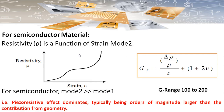For semiconductor materials, Mode 2 dominates — that is, the resistance change due to change in resistivity dominates. The resistivity is not constant; it varies with applied strain. Typically, this effect is many orders of magnitude larger compared to the resistance change due to dimensional change. The gauge factor for semiconductor materials is very high, in the order of 100 to 200.